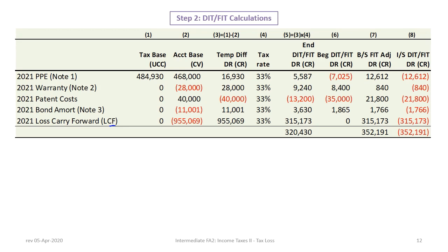The last item is the loss carry forward. The tax base is zero; the accounting base is negative nine hundred fifty-five thousand and sixty-nine. Zero minus negative equals a positive nine hundred fifty-five thousand sixty-nine, a debit balance — an asset — representing future deductibility. Times thirty-three percent gives an ending deferred tax asset for loss carry forward of three hundred fifteen thousand one hundred and seventy-three. Since the beginning balance is zero, we debit the deferred income tax asset account for three hundred fifteen thousand one hundred and seventy-three and credit the income statement.